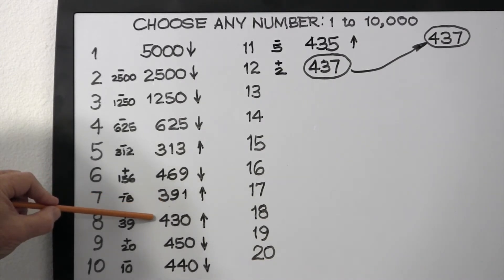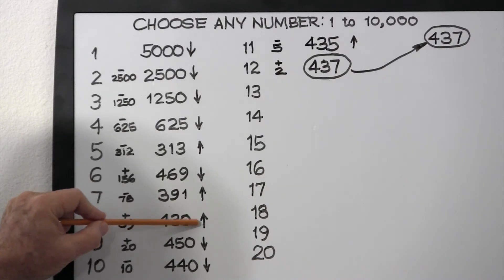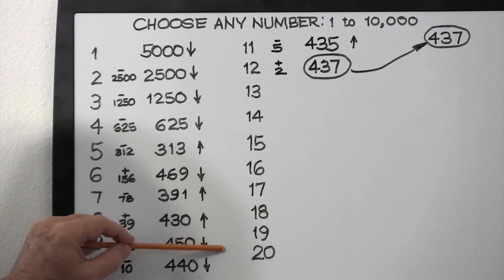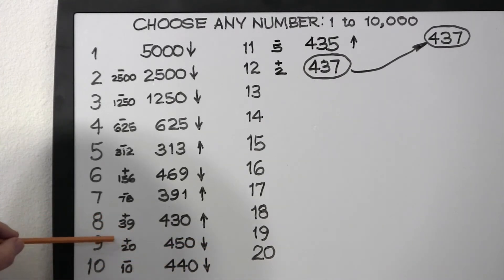We're told, no, that's too low, go up. So we add 20, which is approximately half of 39. That gives us 450, and we're told, no, go down.